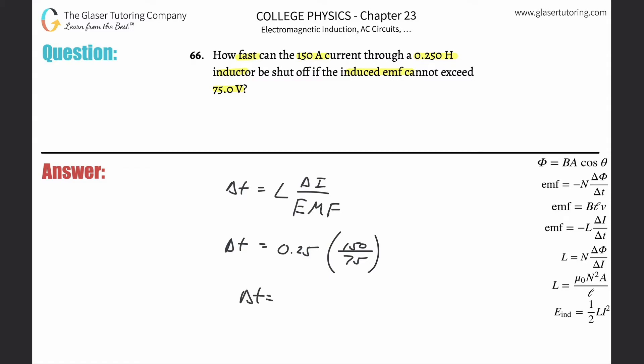So the change in the time here, the time period, is going to be 0.25 multiplied by 150 divided by 75. So 0.5, so about a half of a second, 0.500 seconds.